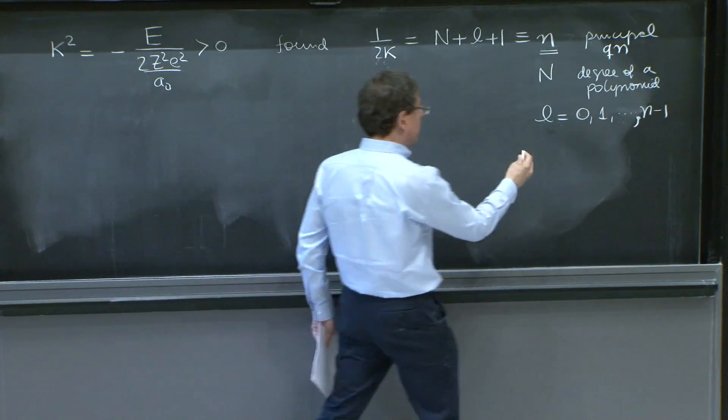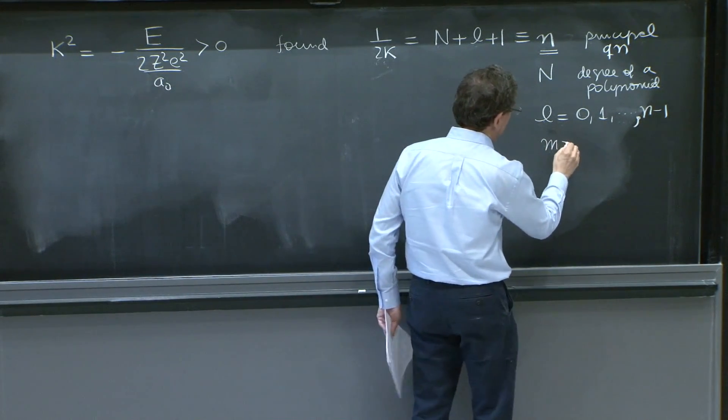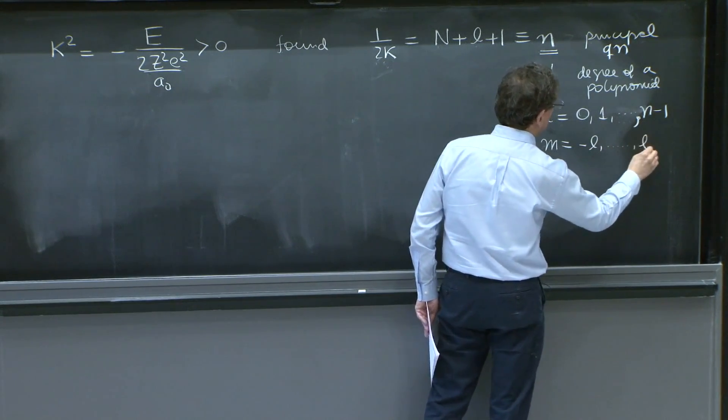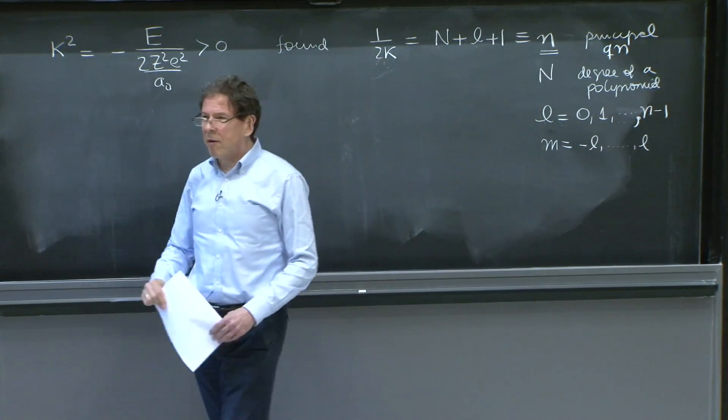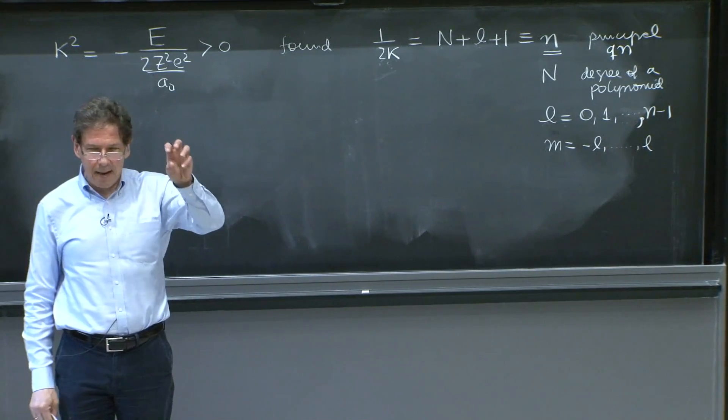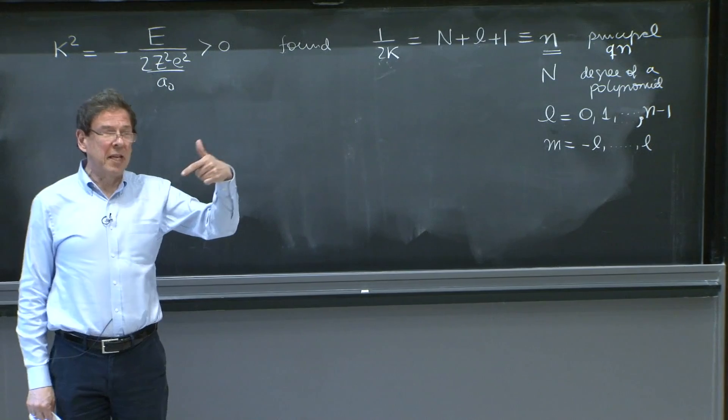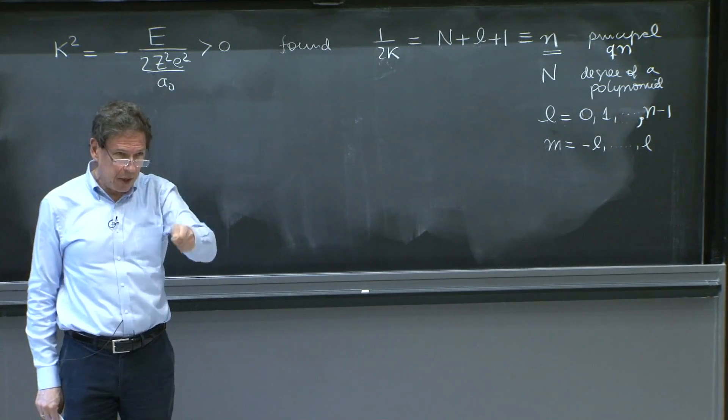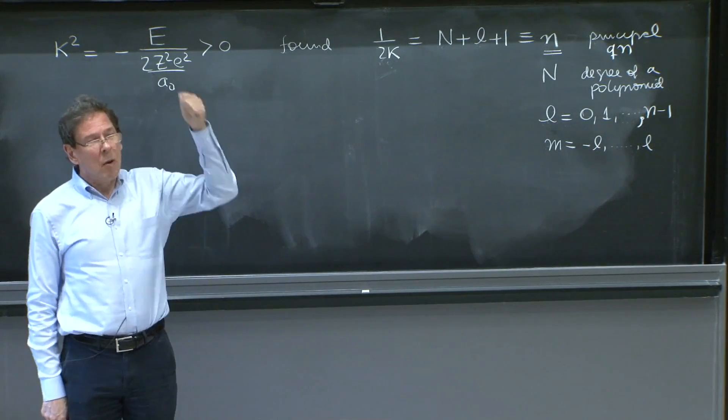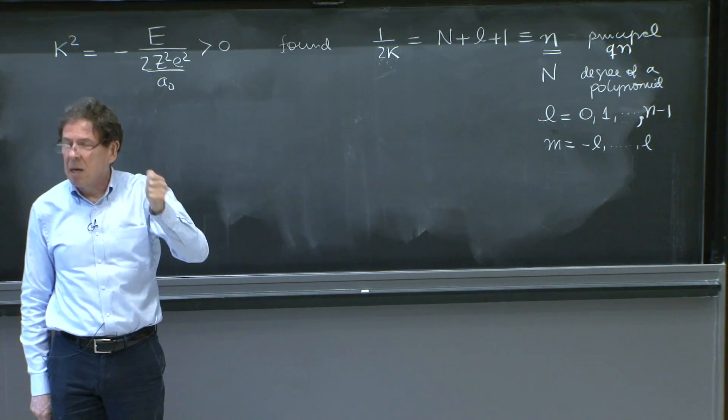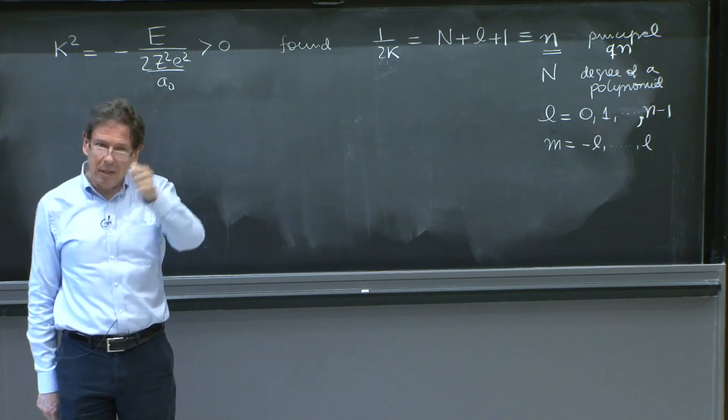And at the same time, in terms of quantum numbers, m goes from minus l up to l. So the order of thinking is fix little n, the principal quantum number, then fix an l that can go from 0 up to n minus 1. Once you fix the little l, you fix the m. And m can go from minus l to l.